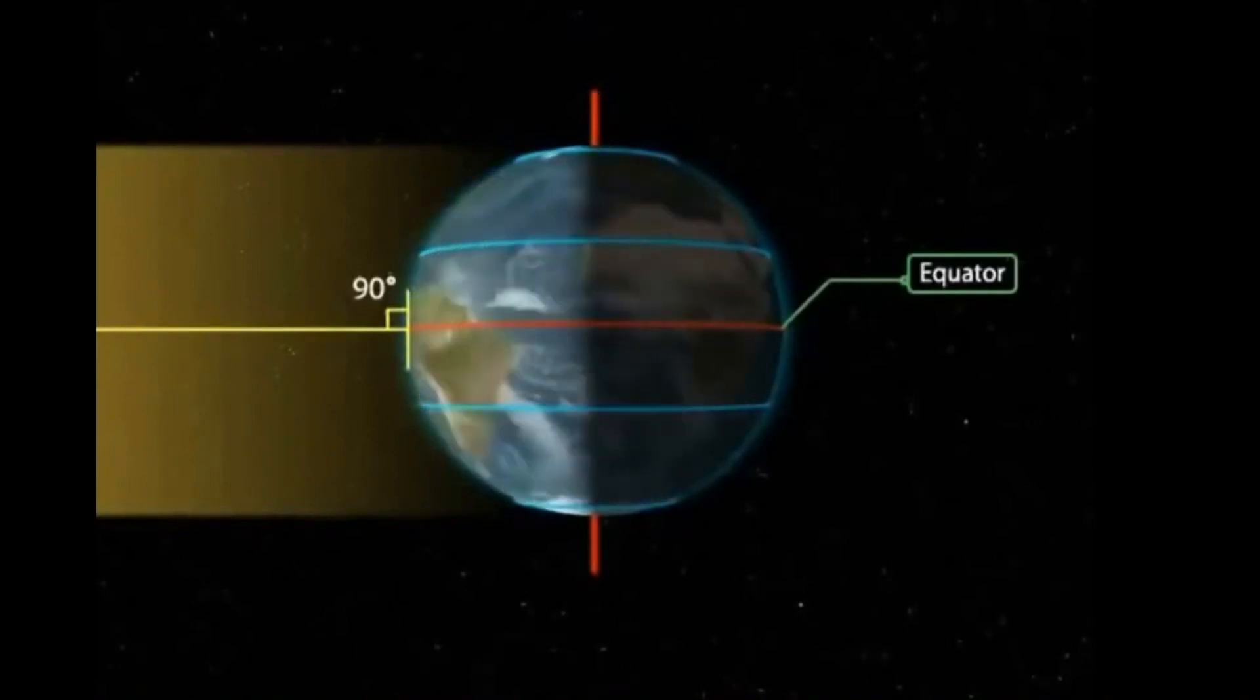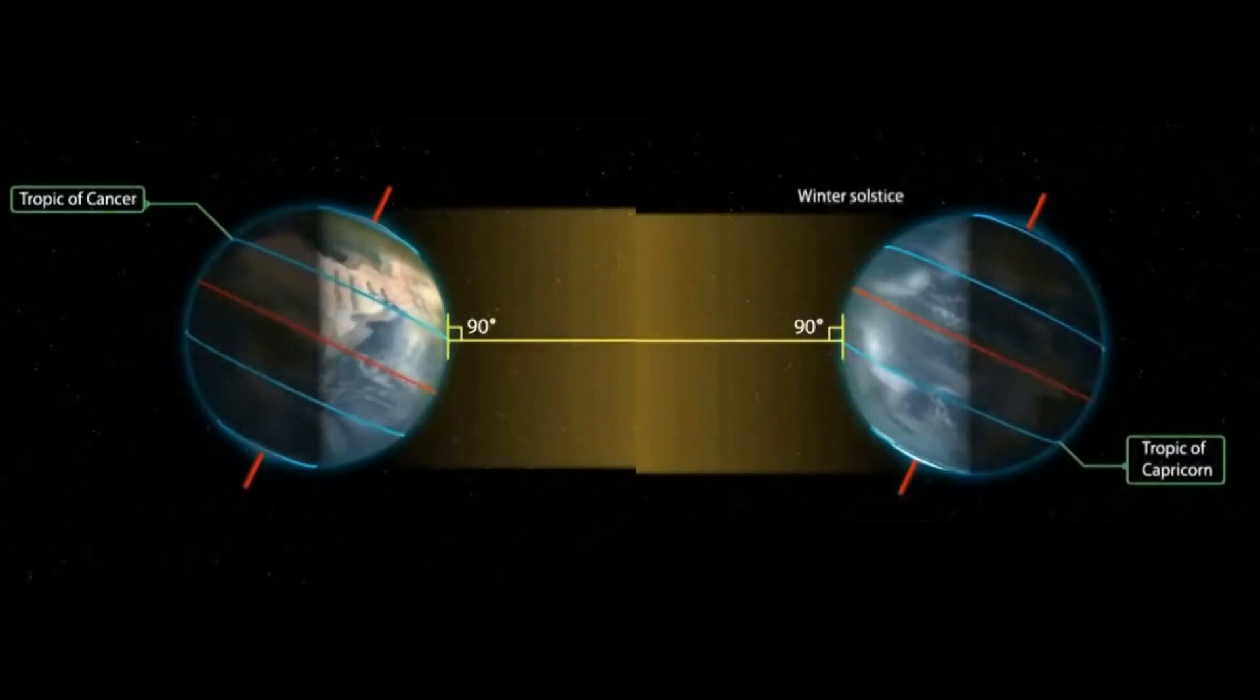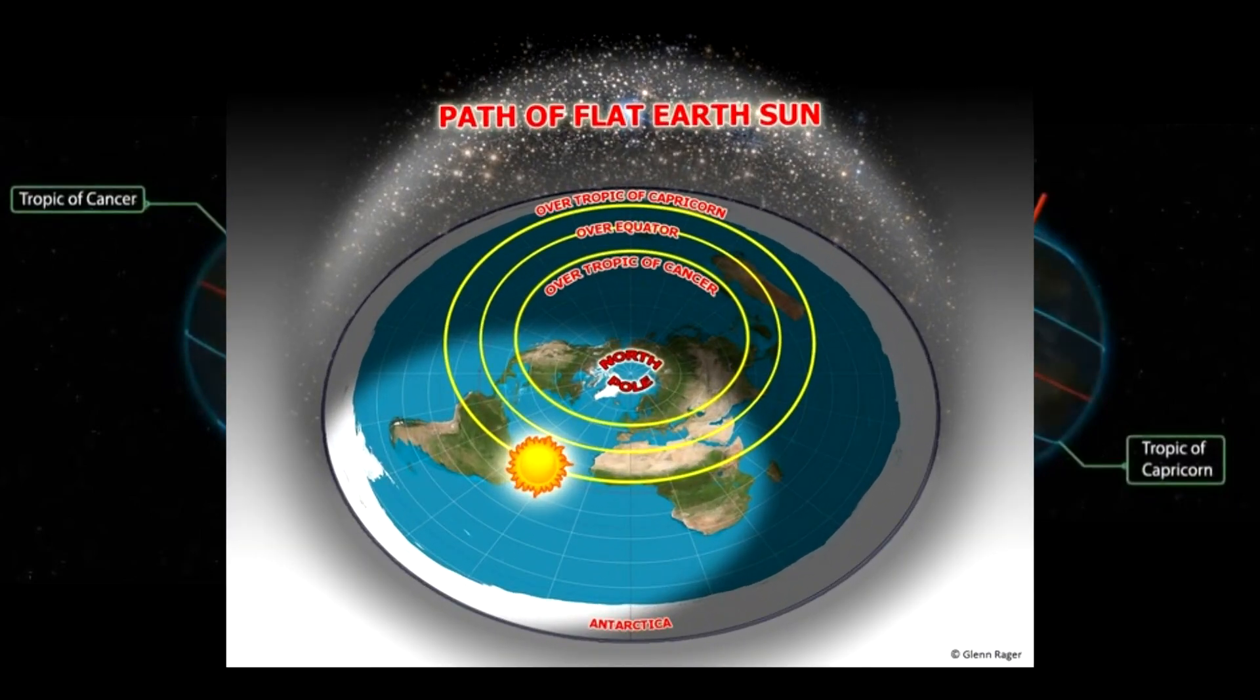During the spring equinox, the noon sun will appear directly overhead an observer on the equator, while during the summer and winter solstices, it will appear directly overhead observers in the tropics of Cancer and Capricorn. This means on the flat earth, the sun must be moving back and forth between these latitudes.